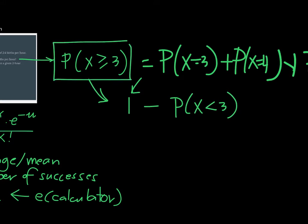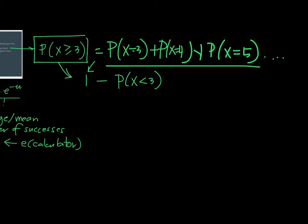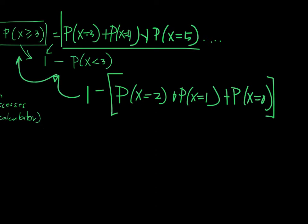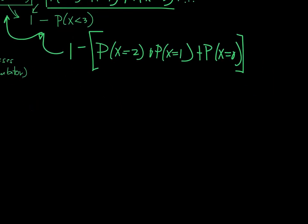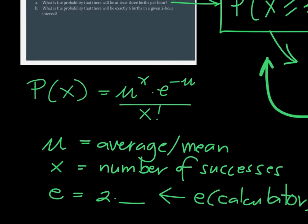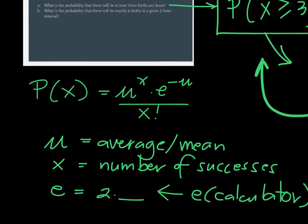In other words, to find the probability starting at three, we compute the probability that x equals two, the probability that x equals one, and the probability that x equals zero, add all of these together, and subtract from one — then we obtain the probability that x is greater than or equal to three. We will use the Poisson probability formula: mu to the x times e to the negative mu over x factorial.